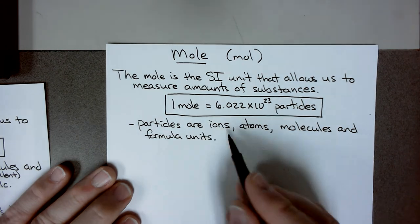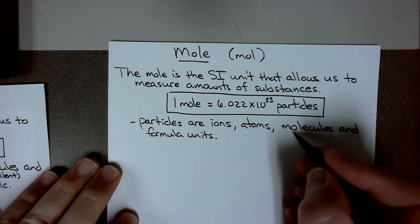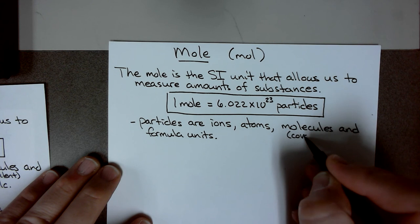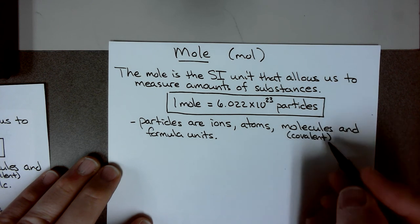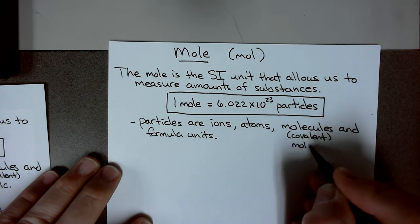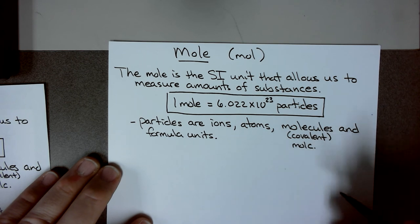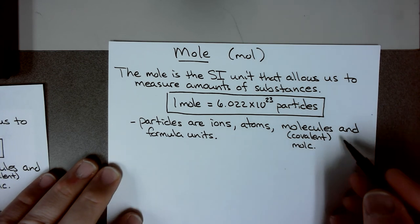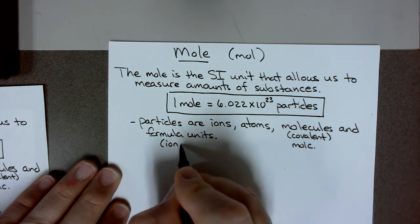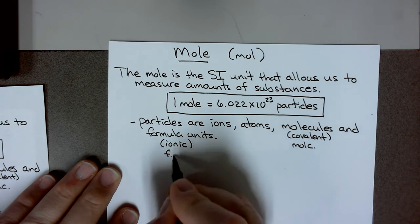Atoms are the smallest unit of an element. Molecules are the smallest unit of a covalent compound — shorthand for molecules is MOLC dot. Be careful, that looks like mole but it's MOLC, not MOLE. Formula units are for ionic compounds — they're the smallest unit of an ionic compound, and shorthand is FU dot.